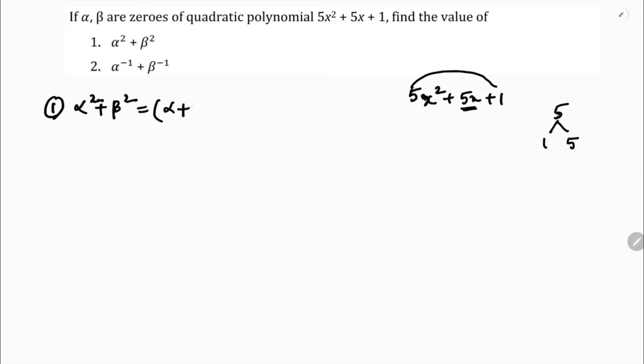I can write alpha square plus beta square as alpha plus beta whole square minus 2 alpha beta. So if we compare with the standard form ax square plus bx plus c, I will write the values of a, b, and c. a is 5, b is 5, and c is 1.